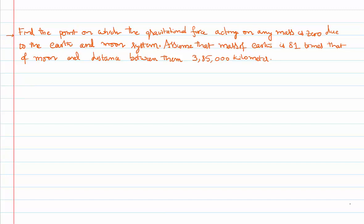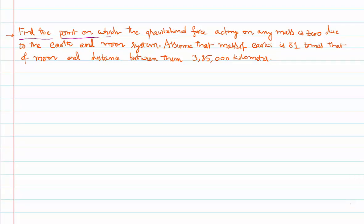Hello everyone, welcome to this video lesson. In this video lesson we are solving a problem from a topic called gravitation. Let me read out the problem first. Find the point on which the gravitational force acting on any mass is zero due to the earth and moon system. Assume that the mass of the earth is 81 times that of the moon and the distance between the earth and moon is three lakh eighty thousand kilometers.